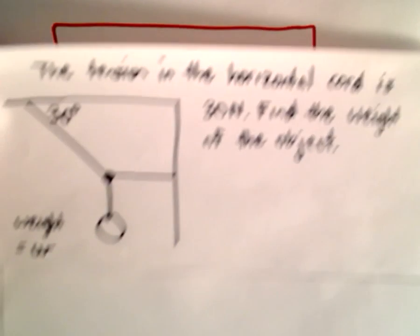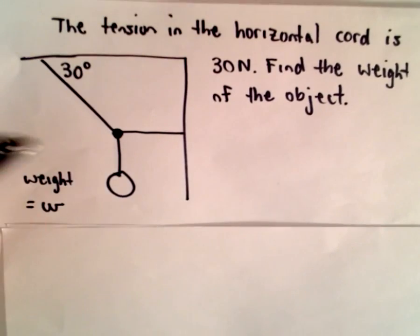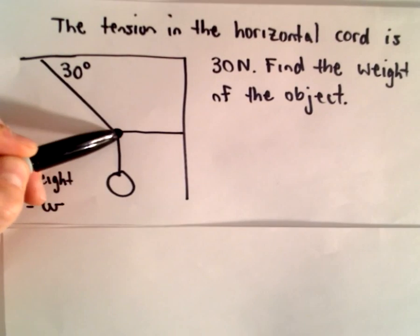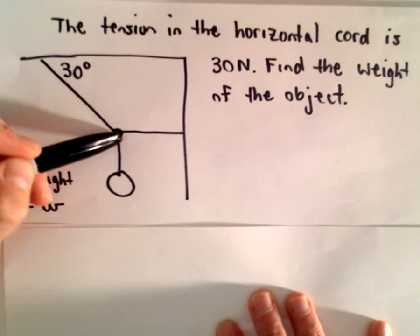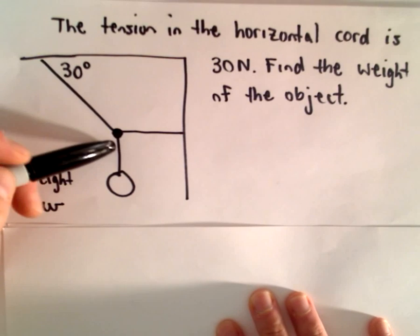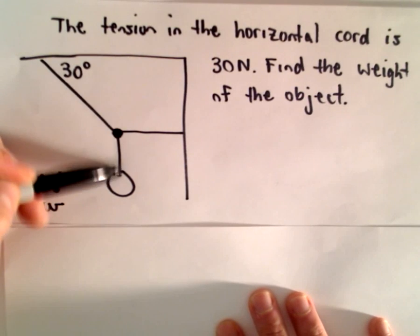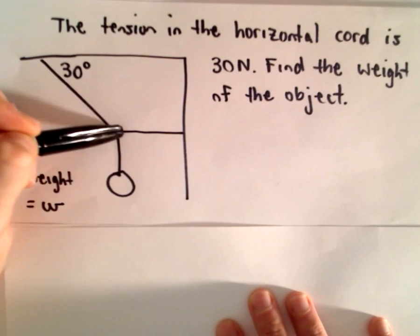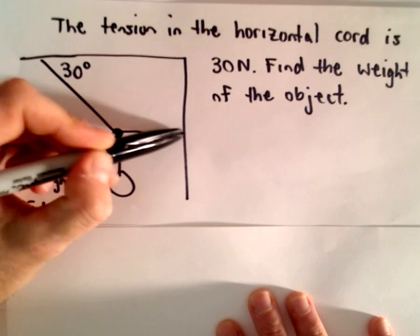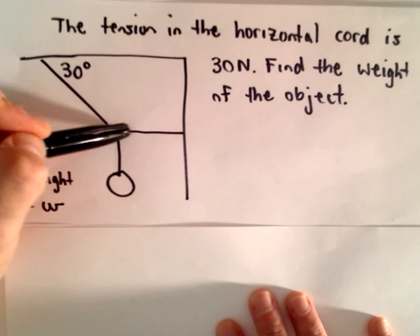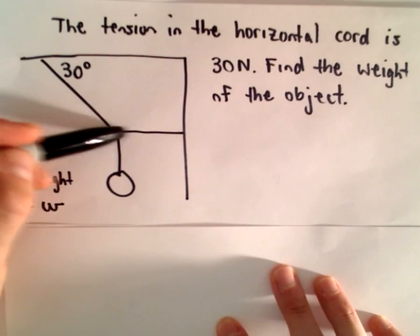And what we're going to do in this case is we're going to find the weight of an object. So we've got some object hanging from a cord and there's a knot that connects these three cords in general. So we've got the weight of the object, we've got a cord that connects it horizontally to the wall.